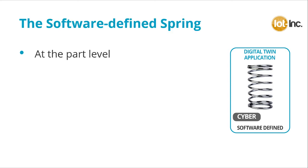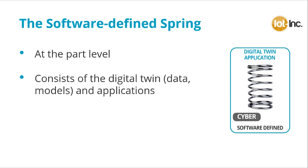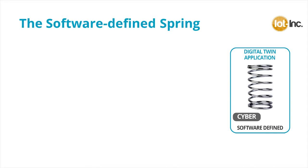The software-defined spring will be defined at the part level and will consist of the digital twin — its data and models. Going back to high school physics, the simple equation F equals kx represents the functionality of the spring.